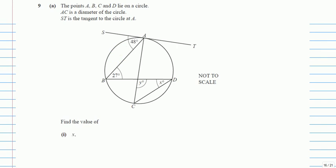Alright, now question number 9 of this paper 4, and let's start. The points A, B, C, D lie on a circle.